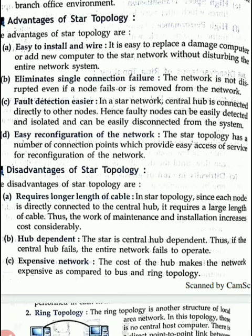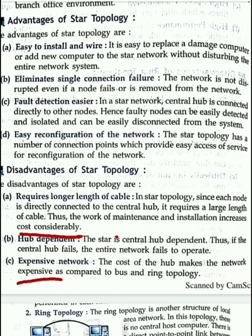One disadvantage is it requires a longer cable length. If we use a larger LAN network, we can use bus topology for small networks, but for a large network we use star topology. Since each node is directly connected to the central hub, it requires a larger length of cable, increasing maintenance and installation cost. The hub is also expensive as compared to bus topology.